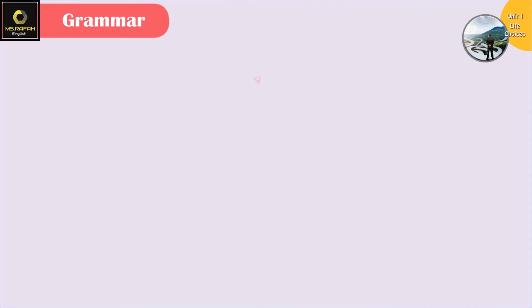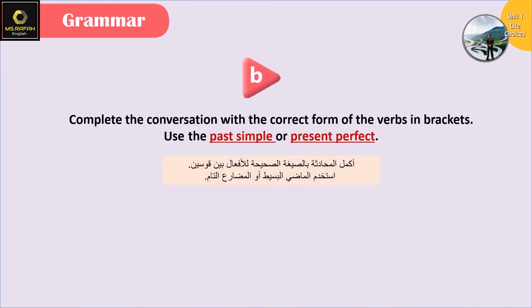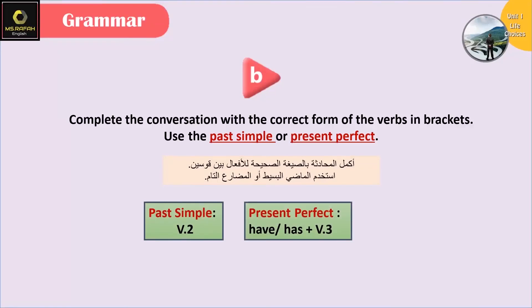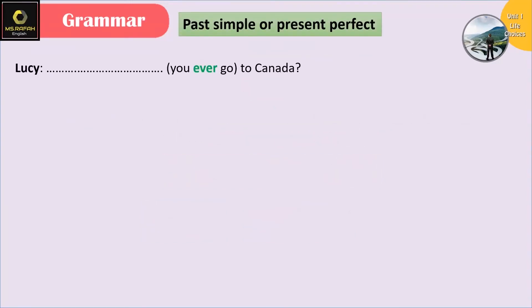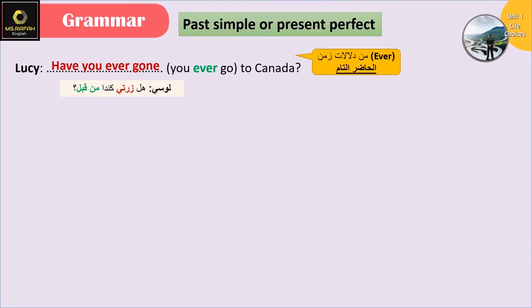Let's move on to question B. Complete the conversations with the correct form of the verbs in brackets. Use the past simple or present perfect. Lucy - في عنا 'ever'، يعني بحياتك كلها، هاي من دلالات أي زمن؟ الحاضر التام. شكله: have زائد الفعل بالتصريف الثالث. Have you ever gone to Canada? التصريف الثالث للفعل 'go' هو 'gone'.